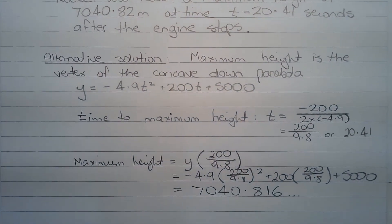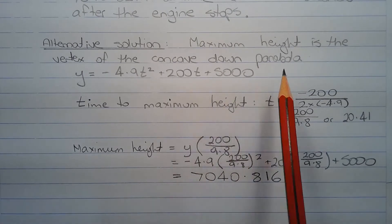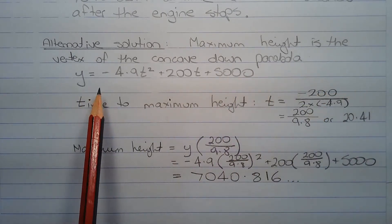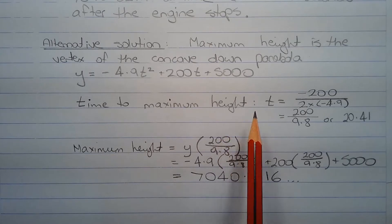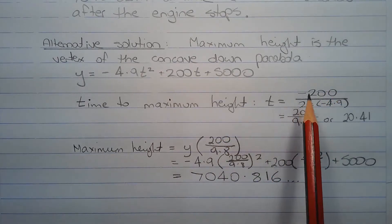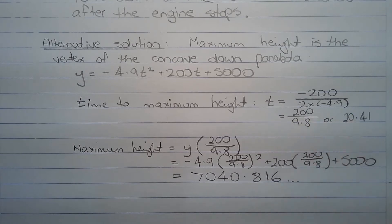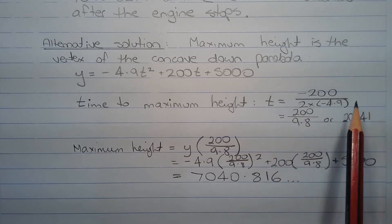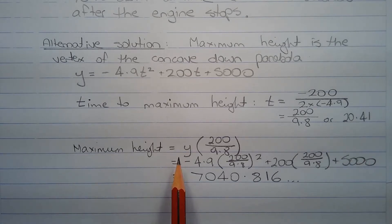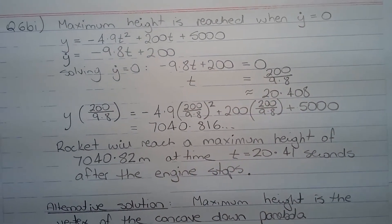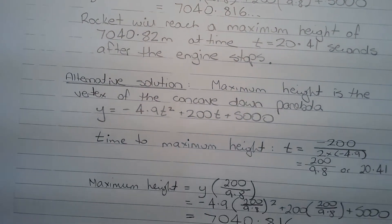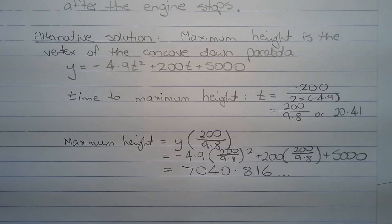There is an alternative solution. The maximum height is the vertex of the concave down parabola y equals negative 4.9t squared plus 200t plus 5000. The time to maximum height is found by t equals negative b on 2a, so that is negative 200 over 2 times negative 4.9, which equals 200 over 9.8, or approximately 20.41. The maximum height is found by substituting 200 over 9.8 into the equation for vertical displacement, and again we obtain 7040.816. Whether using calculus or the properties of a parabola, we end up with the same result.